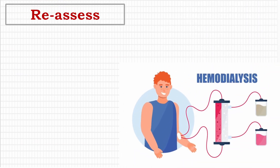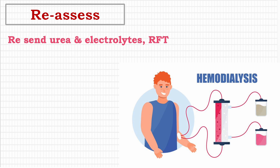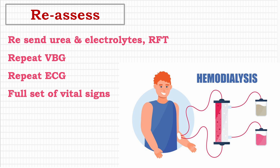Recheck potassium level at one to two hours and again at four to six hours to monitor for ongoing hyperkalemia. Repeat urea and electrolytes, renal function tests, venous or arterial blood gas, ECG, and a full set of vital signs. If potassium remains high and the patient is in cardiac arrhythmia, then the definitive method of excess potassium removal is hemofiltration or dialysis.